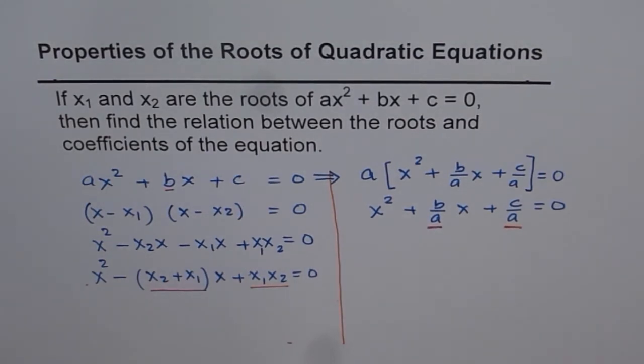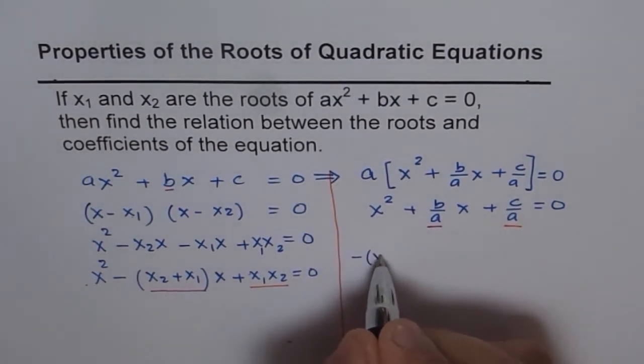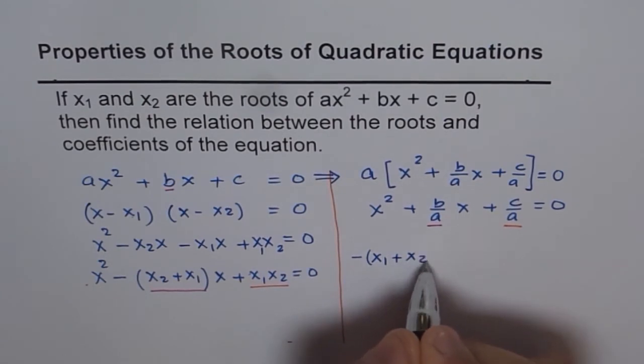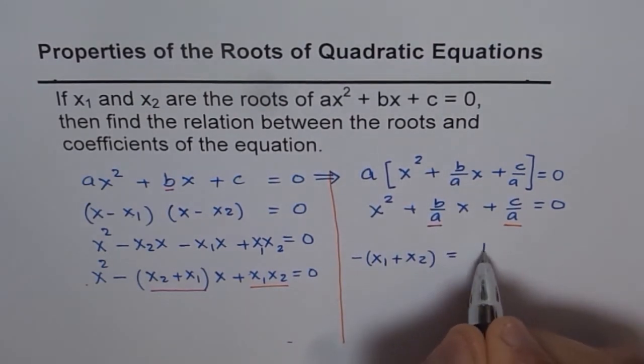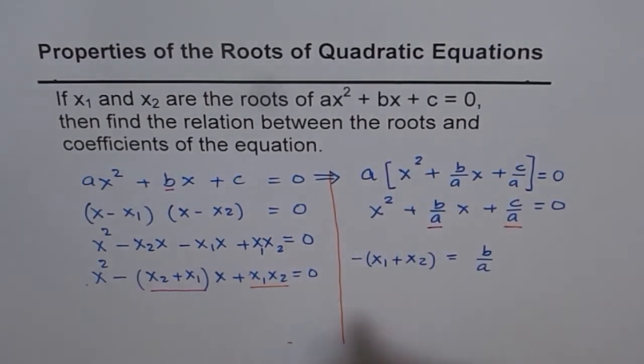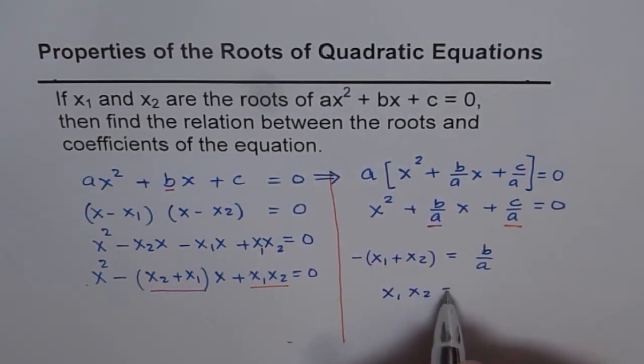So what we can equate from here is that minus (x1 plus x2) is equal to b over a, right? And the product x1 and x2 is equal to c over a.